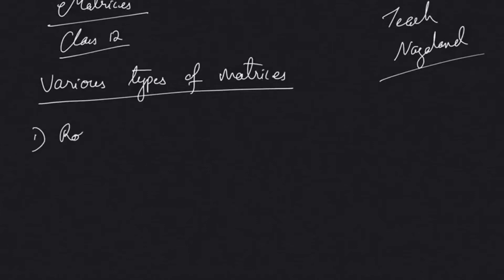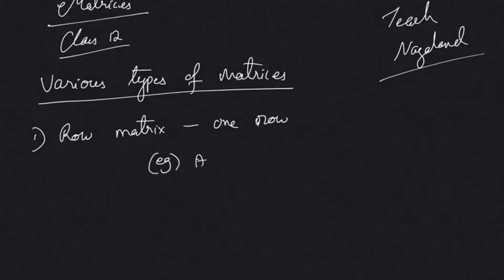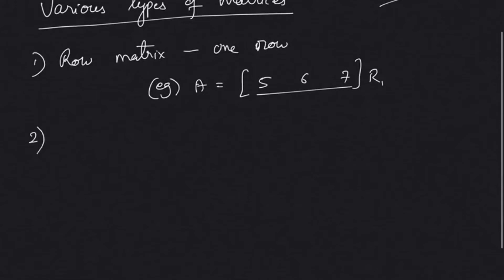The first matrix we are going to study today is the row matrix. A row matrix is that matrix which has only one row. For example, a matrix A denoted by capital letters — 5, 6, 7 — we can see that this has only one row.